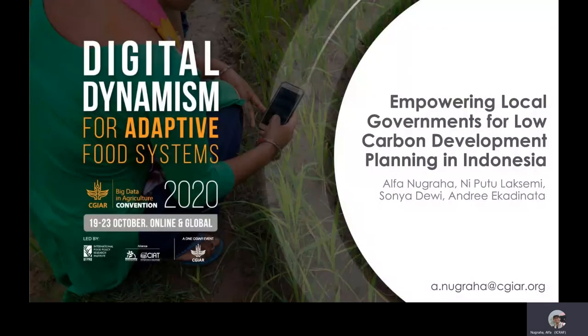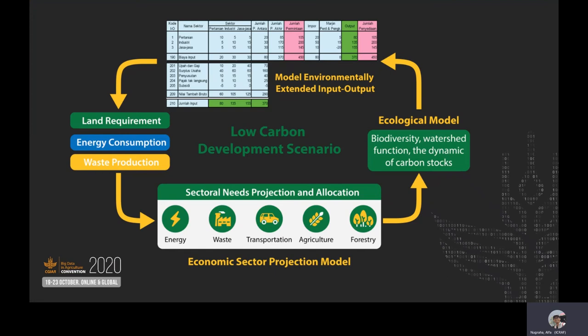Hi everyone. My name is Alfa Mugraha from ICRAF Indonesia. I will present our work on empowering local governments for low carbon development planning in Indonesia. As one of the objectives of low carbon development planning in the economic structure of a region, especially at the provincial scale, it can be related to changes in environmental conditions, namely greenhouse gas emissions, using the basic framework of the extended input-output table with environmental aspects. The EEIO model can evaluate the relationship between economic activities and environmental impacts, such as how an economic sector produces pollution or emissions compared to its output.